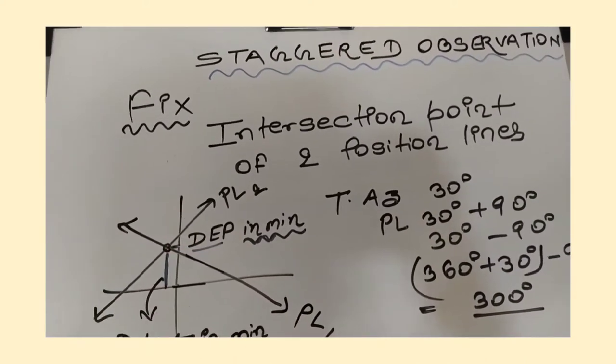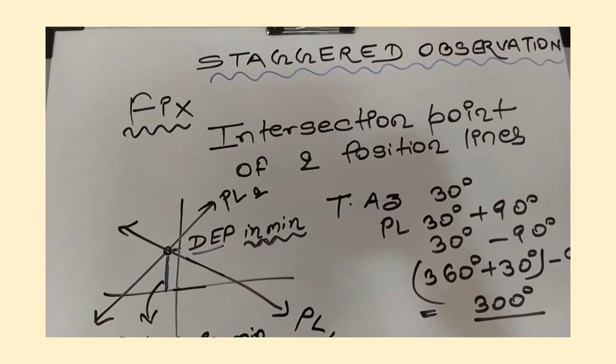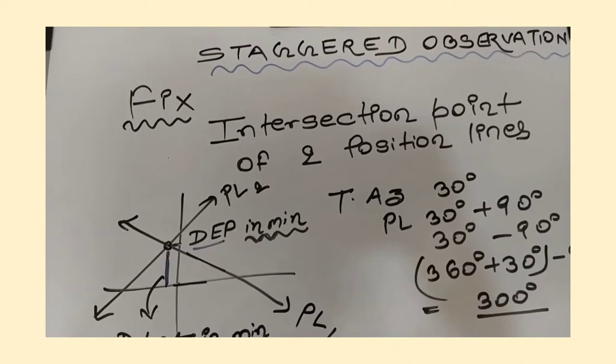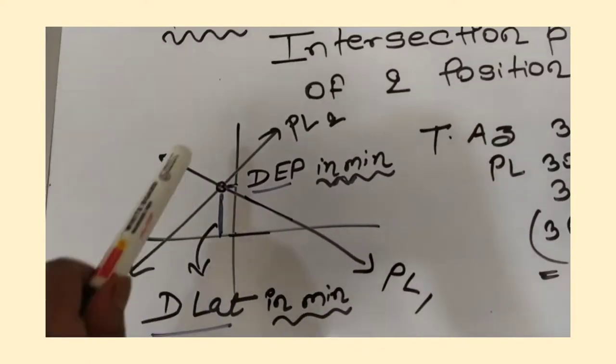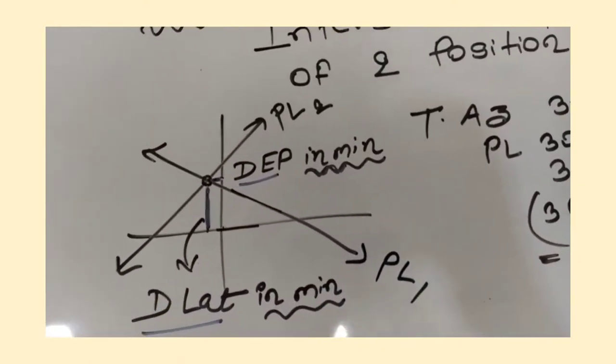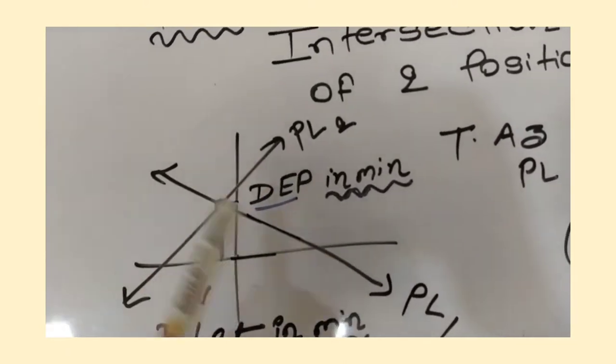Fix, especially in staggered observation, will be the intersection point of two position lines. For example, if you're plotting a staggered observation, this is the first PL and this is the second PL. They are meeting at some point.